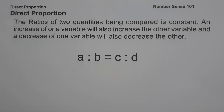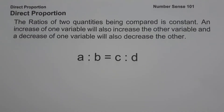For today's video, we are going to talk about what is direct proportion and we are going to explain everything in details. So when we say direct proportion, the ratios of two quantities being compared is constant. Always remember, in direct proportion, an increase of one variable will also increase the other variable, and the decrease of one variable will also decrease the other.